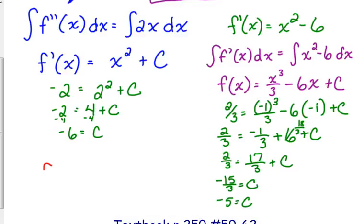So our original function, f of x, is, and you can write it as x cubed over 3 or 1 third x cubed. It doesn't matter. Minus 6x minus 5. That is the original function.